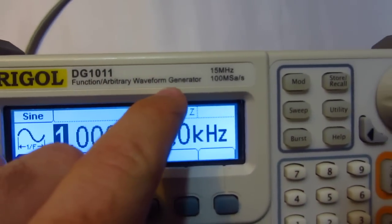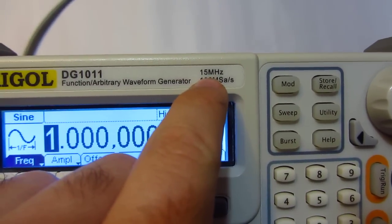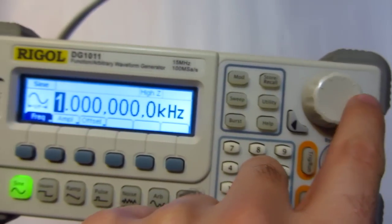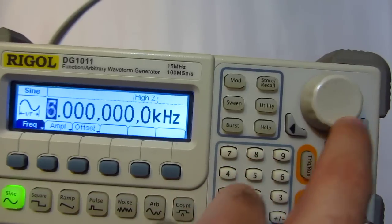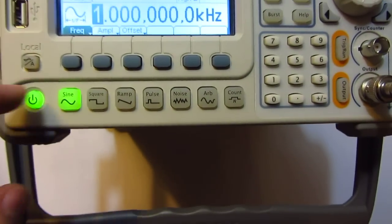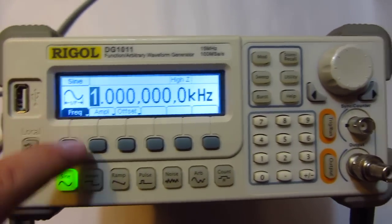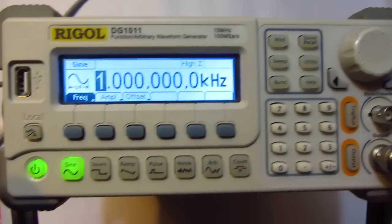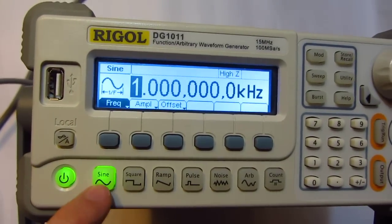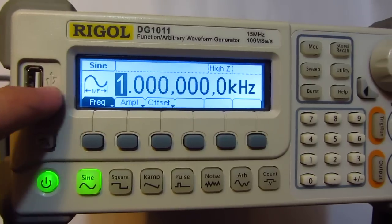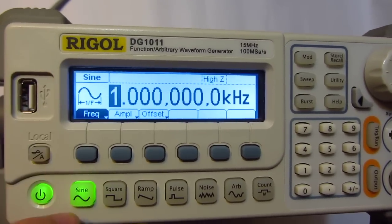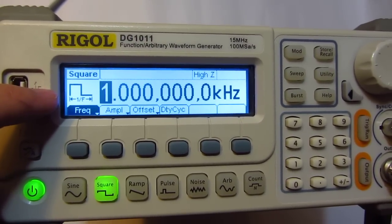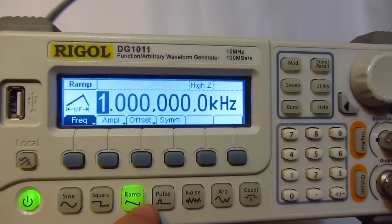It goes up to 15 MHz. This button is for frequency, that button is for amplitude, and that one is for offset. Here we have the waveform shape - it's a sine wave. If I press square, then it's a square wave. There's also ramp, pulse, noise, arbitrary signal, and counter.